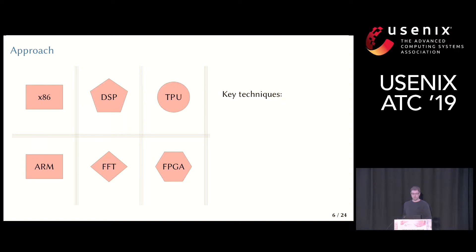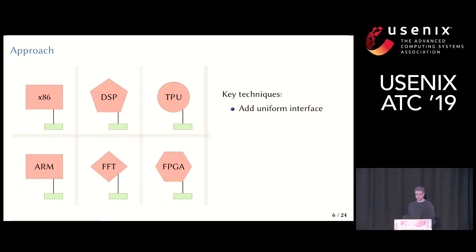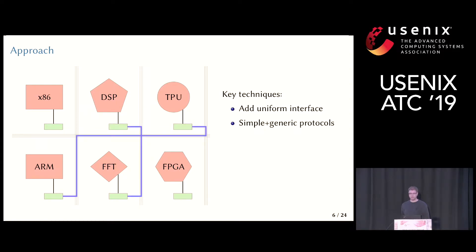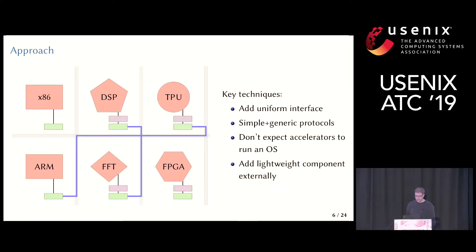The key techniques we use to solve these problems are: first, adding a uniform interface to potentially very heterogeneous compute units; second, using simple and generic protocols between compute units to give them access to operating system services, using the same protocols for all compute units; and third, rather than expecting accelerators to have features that OSes need, we add a lightweight component externally to them to speak these protocols.